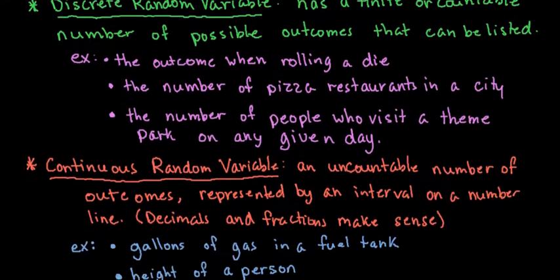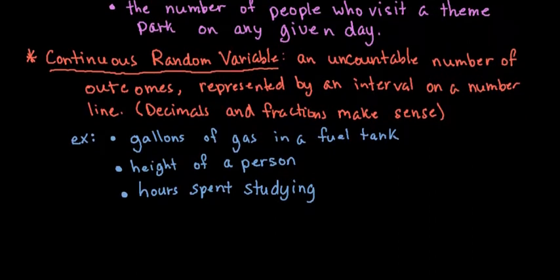The second kind of random variable that we deal with in statistics is known as a continuous random variable. A continuous random variable is an uncountable number of outcomes, represented by an interval on a number line. For this, it makes sense to have decimals or fractions. It's something that you can't count. It goes up in a continuous fashion, such as the gallons of gas in a fuel tank.